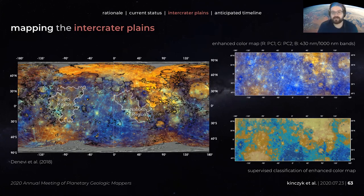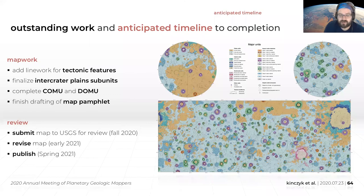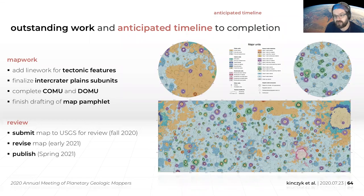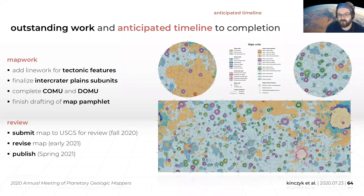The anticipated timeline: we have almost everything in place. We need to update the line work of tectonic features, finalize the subunits of the intercrater planes, complete the CAMU and DAMU which will reflect what we find for the intercrater planes mapping, and finish drafting the map pamphlet, most of which is already in hand. Our hope is to submit for review later this year, revise in early 2021, and publish by spring 2021. Bearing in mind that Mallory now has a new baby and COVID is slowing progress — including my own due to fall teaching — the notional aspirational timeline is to have this published by the middle of next year. And that's it, thank you.